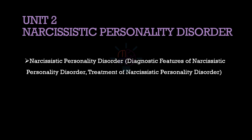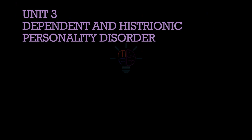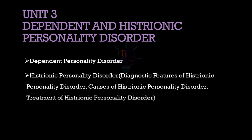From unit 2: narcissistic personality disorder — diagnostic features of narcissistic personality disorder and treatment of narcissistic personality disorder. From unit 3, which is the last unit of this entire subject: dependent personality disorder, histrionic personality disorder — under that, diagnostic features of histrionic personality disorder, causes of histrionic personality disorder, and finally treatment of histrionic personality disorder.